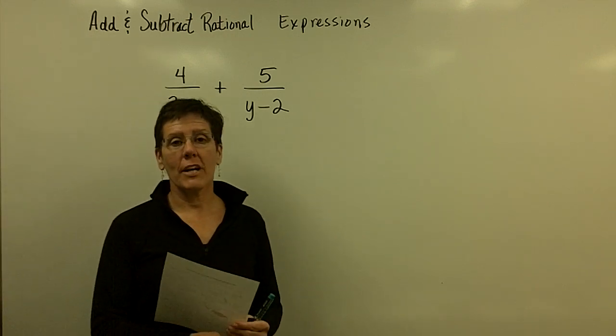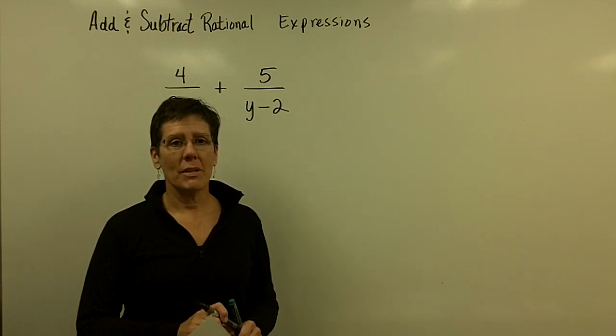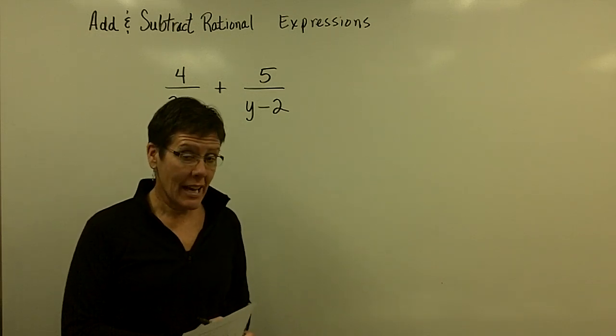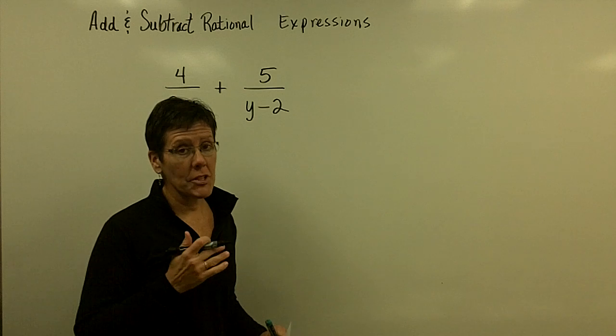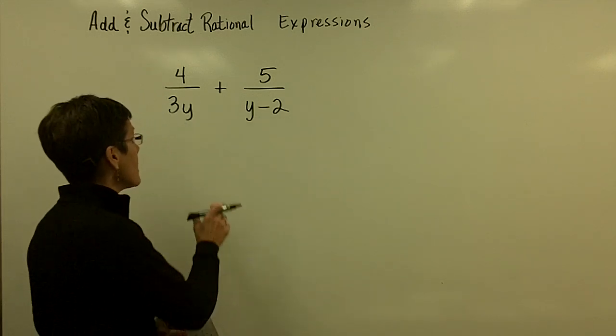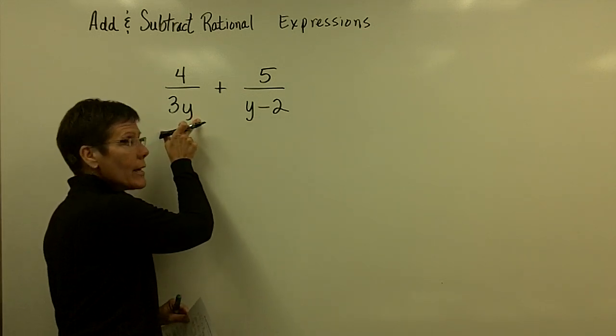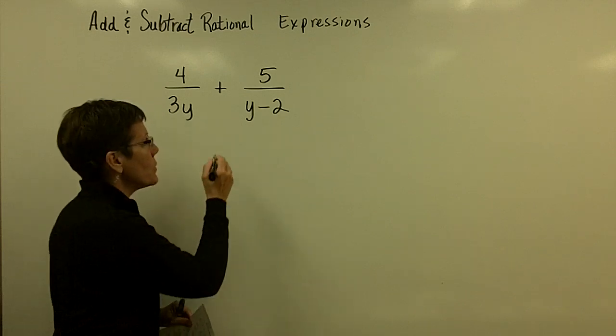Okay, let's keep adding and subtracting fractions. If the denominators can't be factored and they are not alike, I have to use both parts, both pieces. So my least common denominator has 3y and it has y minus 2. Remember...